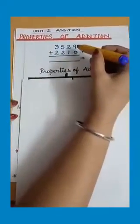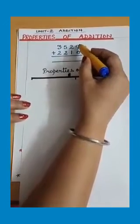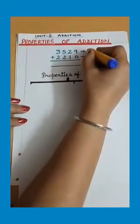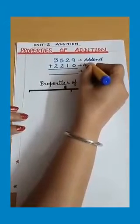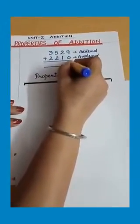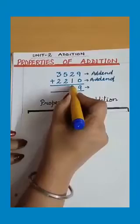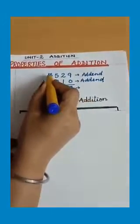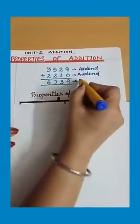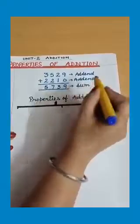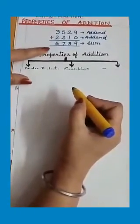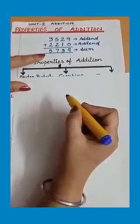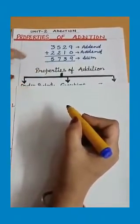For example, we have to add these two numbers. The numbers which are to be added are called addends. This is the first addend. This is the second addend. When we add these two numbers, we get the answer: 9 plus 0 is 9, 2 plus 1 is 3, 5 plus 2 is 7, 3 plus 2 is 5. The answer we get is called sum. The numbers that we add are called addends, and the answer that we get after adding the numbers is called sum.